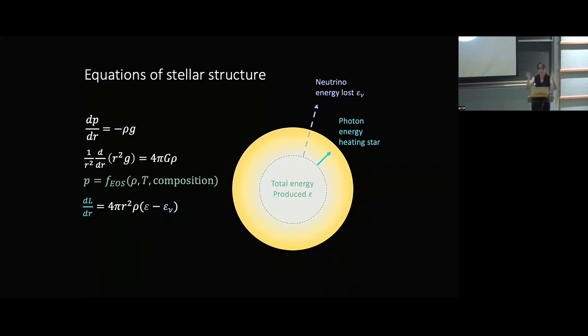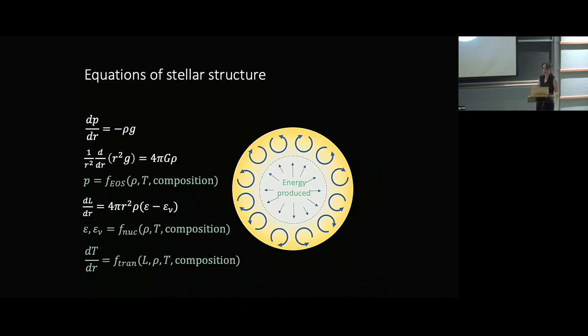Next comes what's called an equation of state that relates the pressure of the gas to the local temperature and density and composition of the star. And while the other two are just classical physics, this one is much more complicated, because it involves things like quantum mechanics, statistical mechanics, and special relativity. The next equation is just a simple statement of energy conservation saying that the energy that's passing through a particular radius in the star comes from whatever is produced inside that radius.